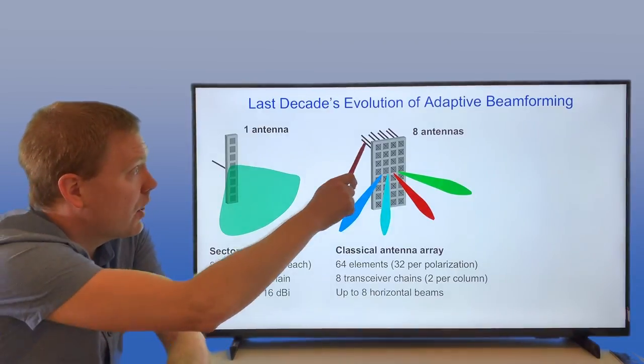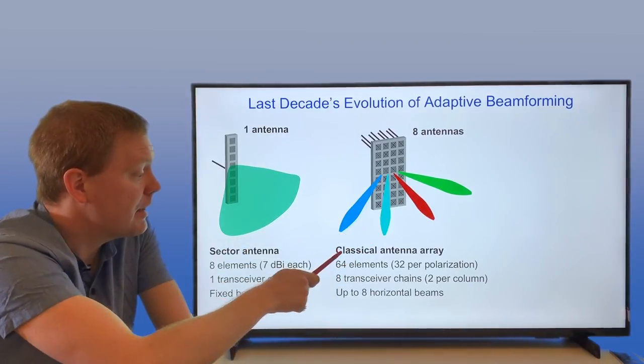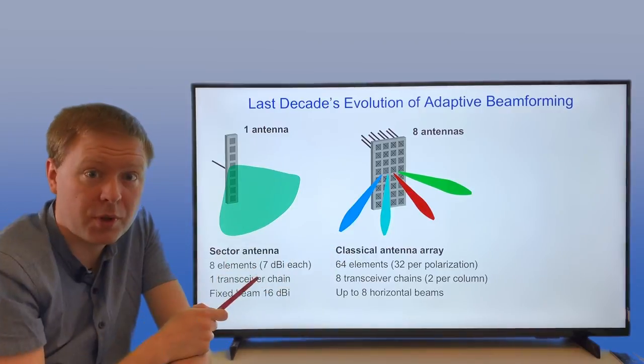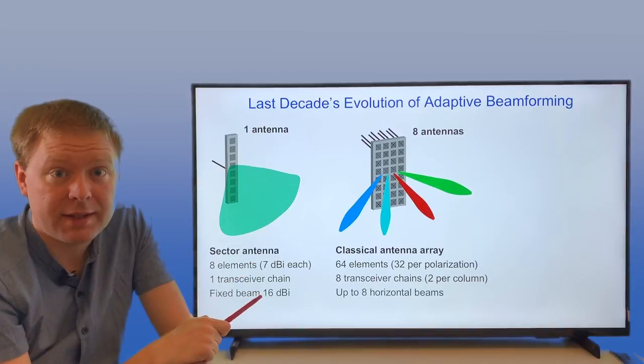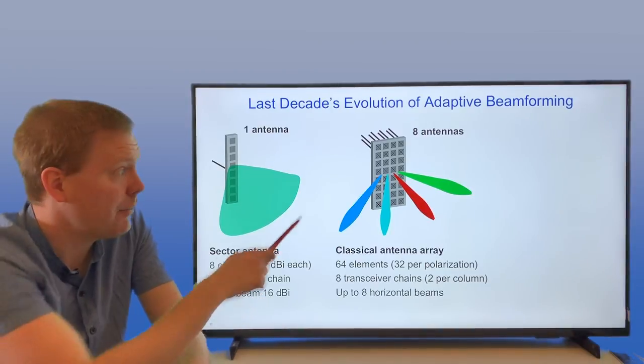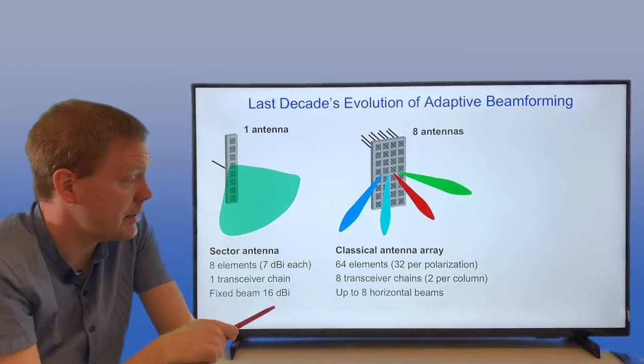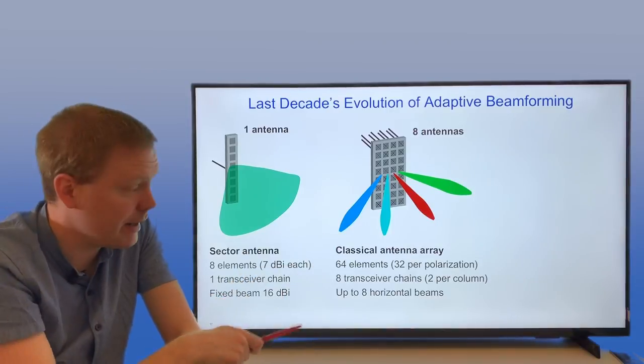In that way, you're getting 64 radiating elements, 32 per polarization. In each column you can steer each of the different polarizations, but you have no access to all of the different elements.